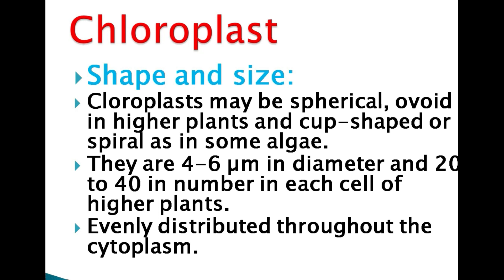Regarding the size of chloroplasts, they may be spherical or oval in shape in higher plants, and cup-shaped or spiral in some algae. Their size is about 4 to 6 micrometers in diameter. The number in each higher plant cell varies from 20 to 40 per cell.